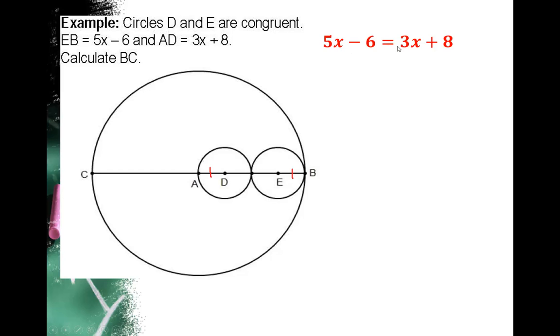I set 5x-6 equal to 3x+8 and solve for x by subtracting 3x from both sides. I get 2x-6 equals -8. Add 6 to both sides and I get 2x equals 14. Divide both sides by 2 and x is 7.